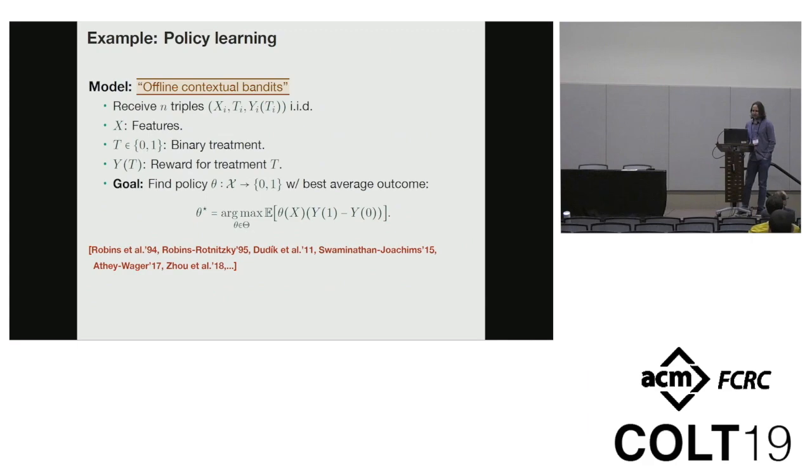To make this more concrete, I'll focus on the problem of policy learning, an observational version of contextual bandits. This is a setting where we get n triples of features, binary treatments or actions T, and rewards, IID. For each example, we only see the reward of the treatment that was taken, not the treatment that was not taken. Our goal is to find a policy that maximizes the expected reward under this distribution.